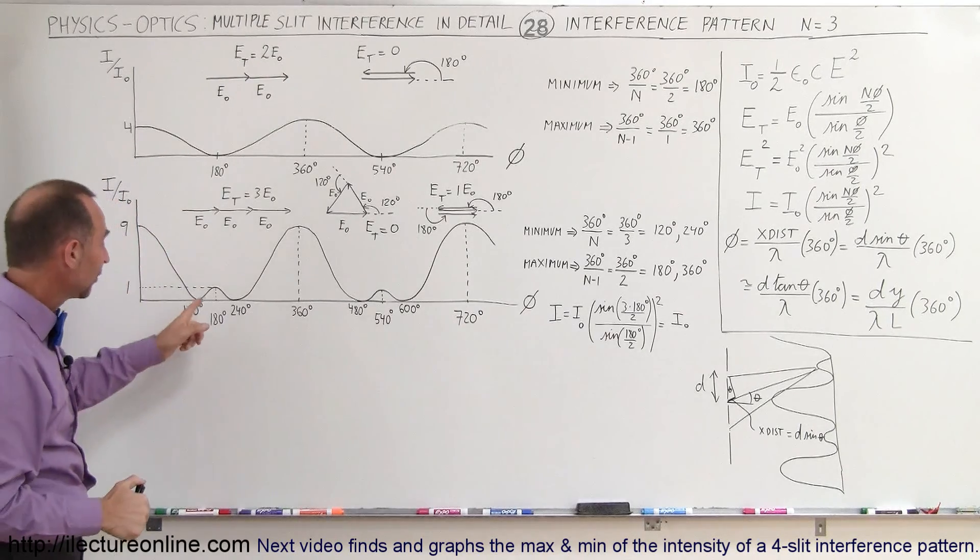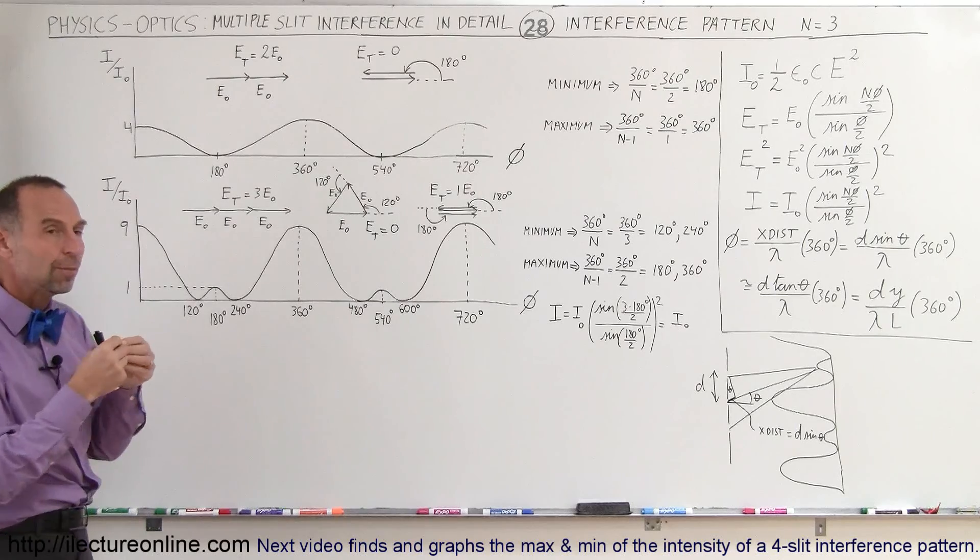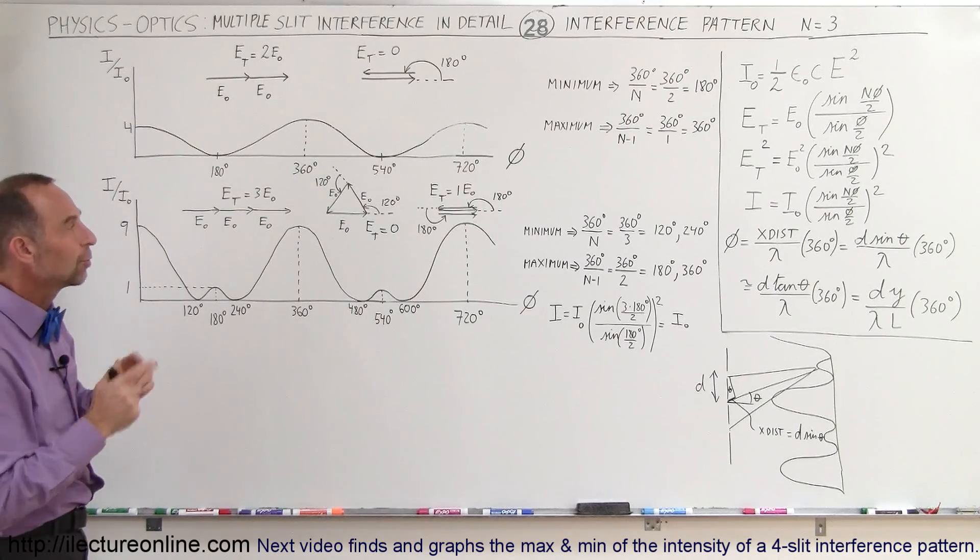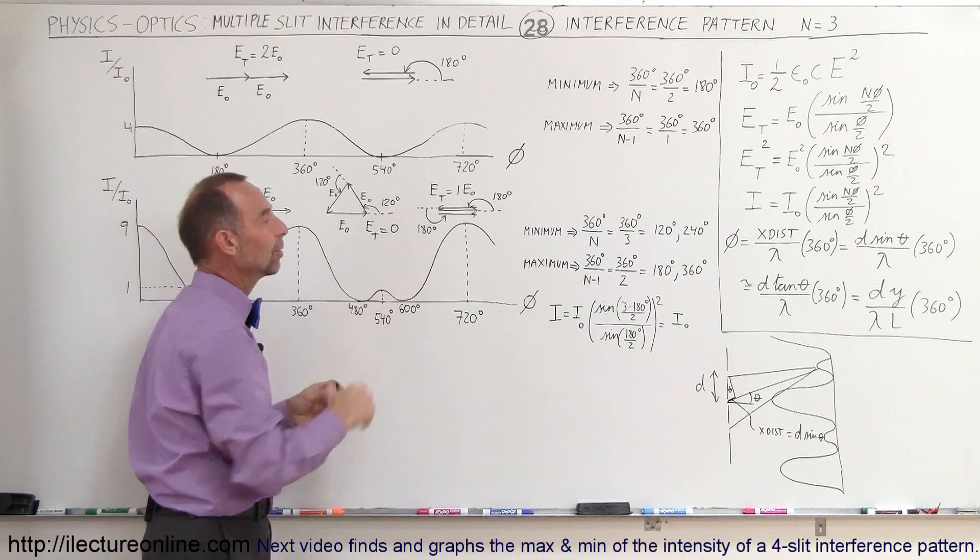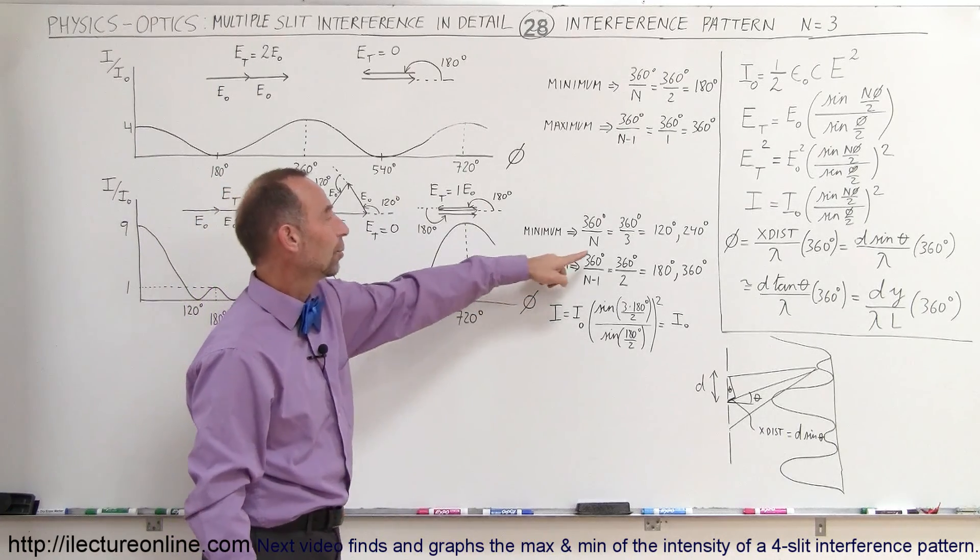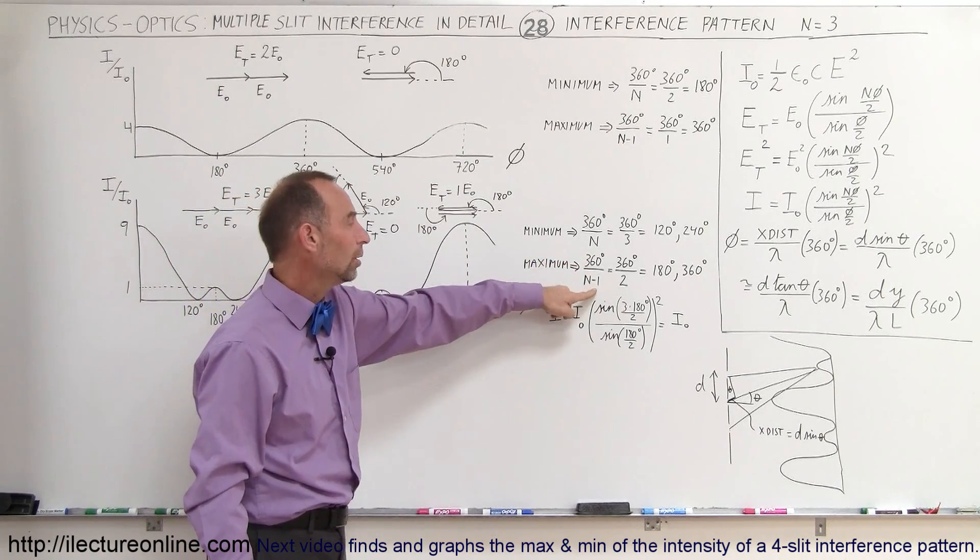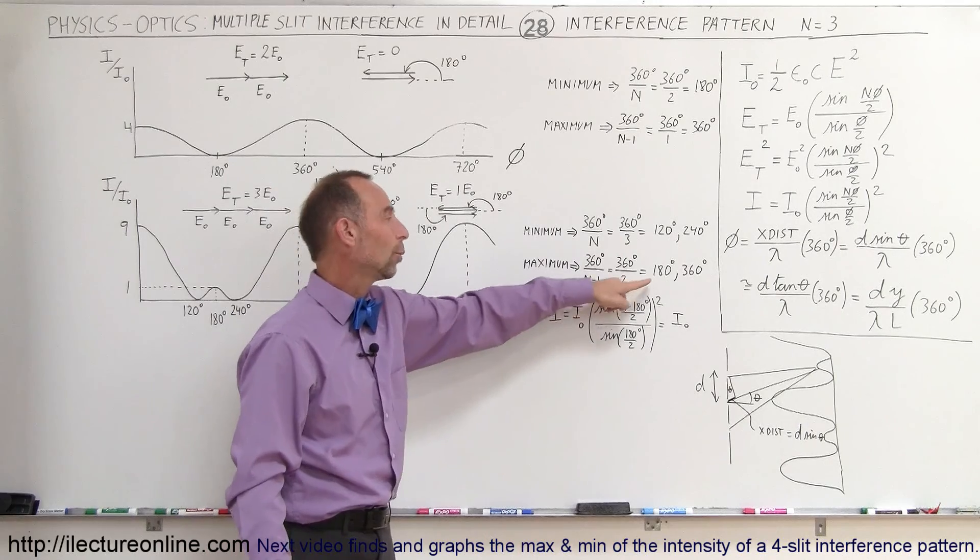Now, here we have kind of like a maximum, but not quite a full maximum. The reason there is when the phase difference is 180 degrees, and we can find that by using the 360 divided by n minus one. So 360 divided by two is 180.